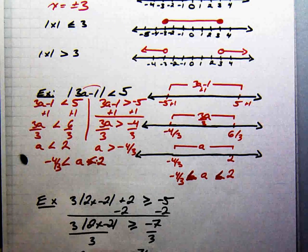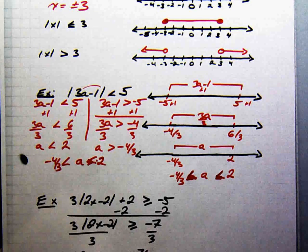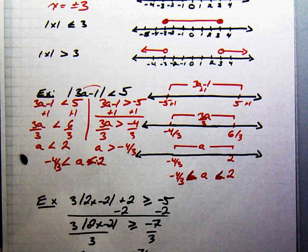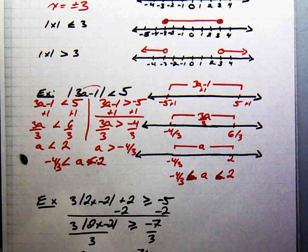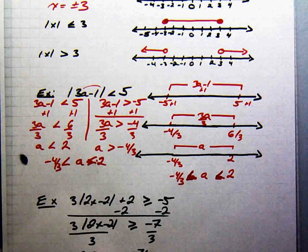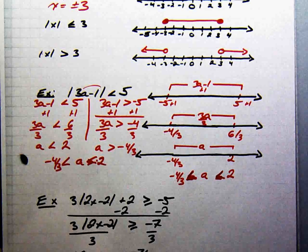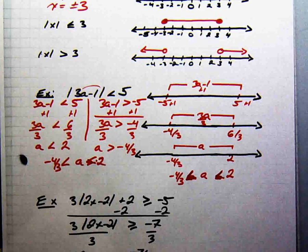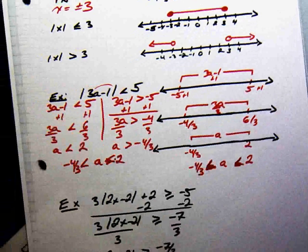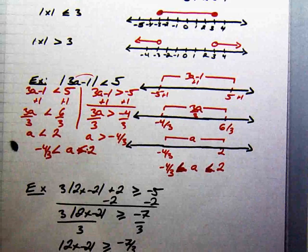Stop here — you don't have to do any more. Remember, absolute value is a distance from 0. Every number on the real number line has a distance from 0 that is greater than or equal to 0, so any number inside the absolute value bars will work. The solution is all real numbers, because distances are always greater than or equal to 0.